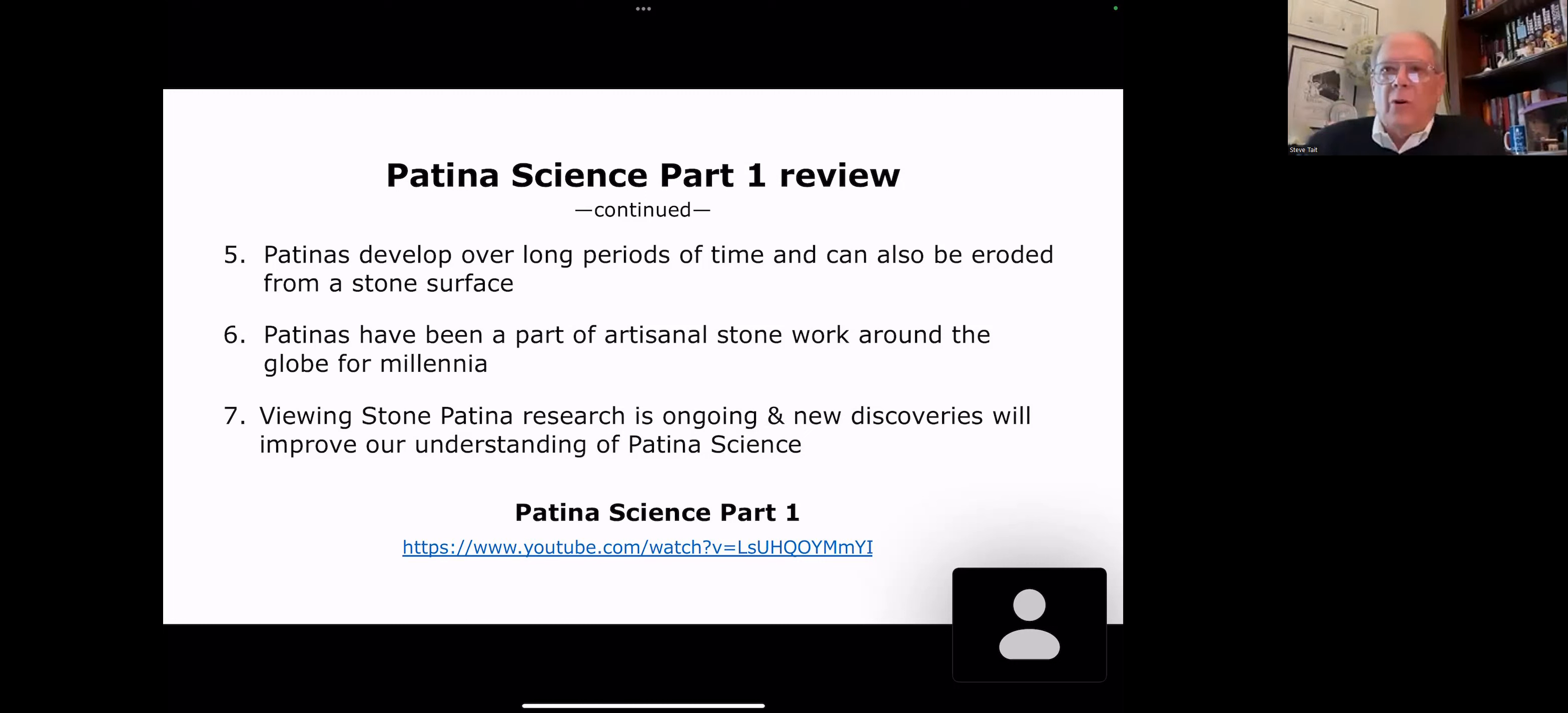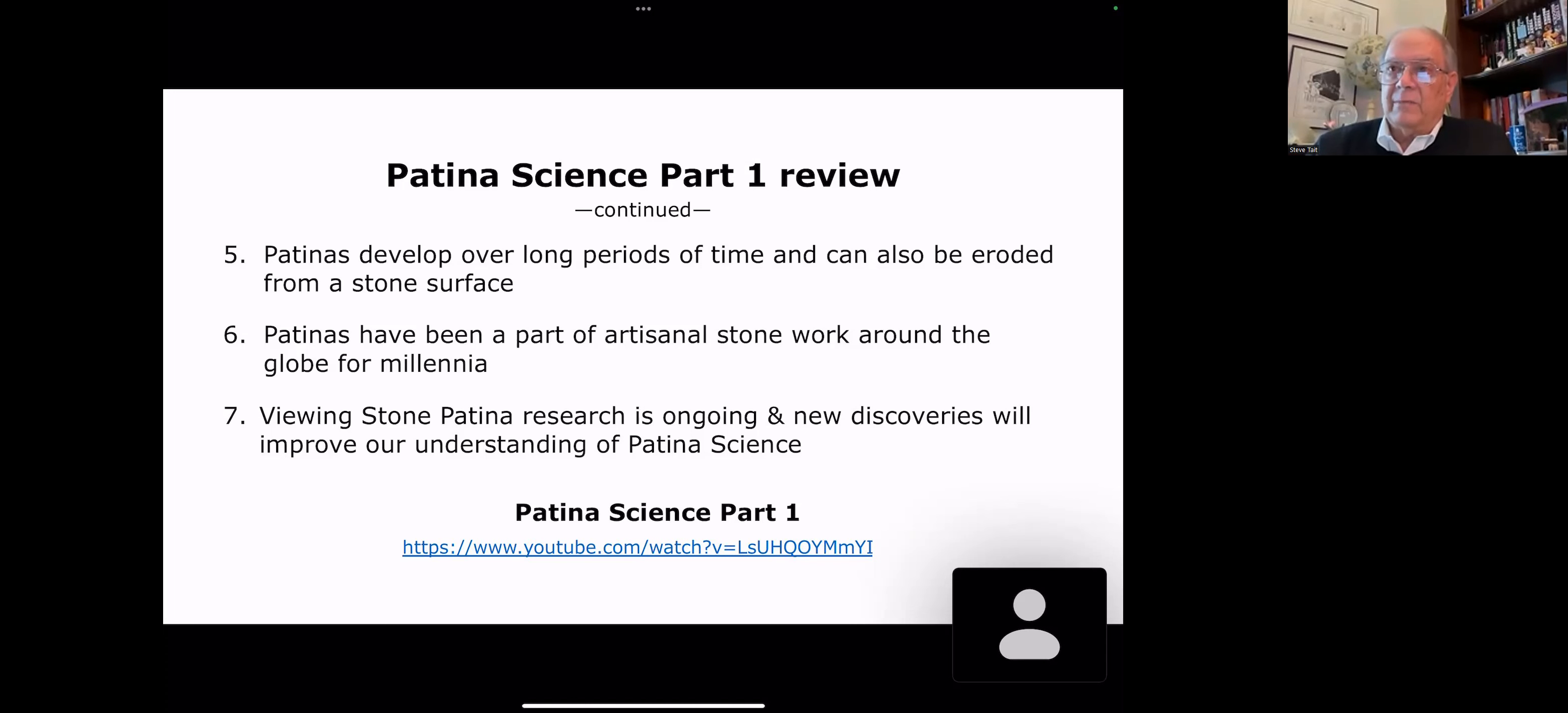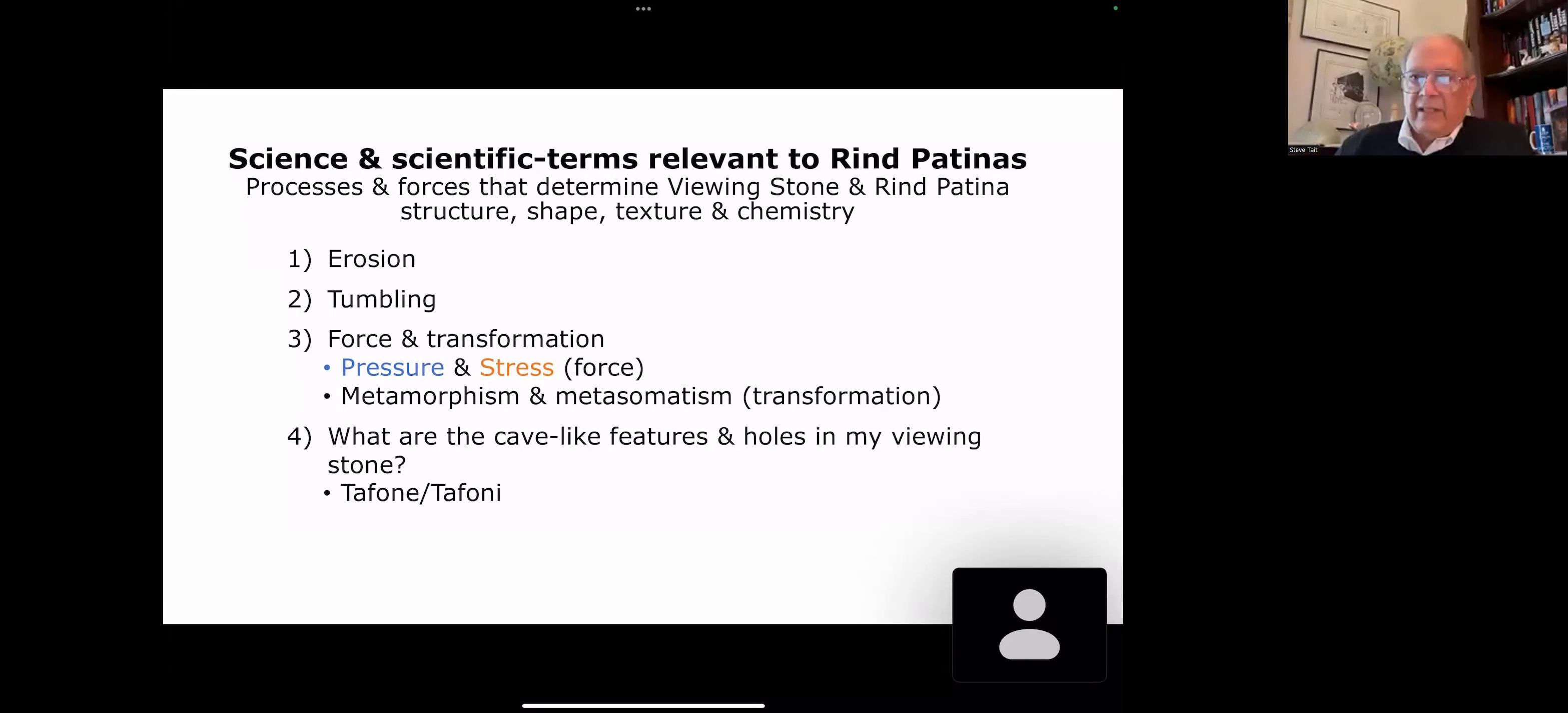Patina science one and today's patina science part two is currently state-of-the-art based on a lot of publications and books. However, in 10 years, I hope that it's different. I hope because the research brings in more knowledge about this and increases our understanding, maybe even changes our theories. Let's start talking about continuing with patina science part two. We're going to start with scientific terms and science relevant to rind patinas. That's the fourth patina that we didn't discuss the last time. We'll start off with processes and forces that determine viewing stone and rind patina structure, shape, texture, and chemistry. So we'll talk about erosion, tumbling, force, and transformation.